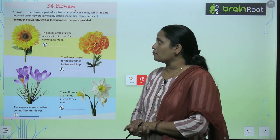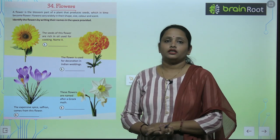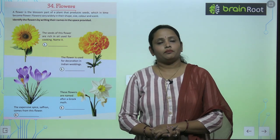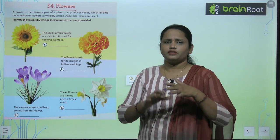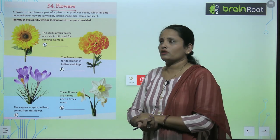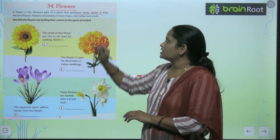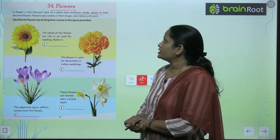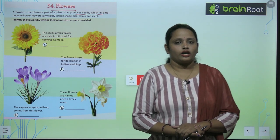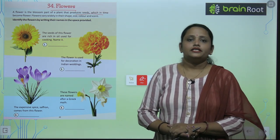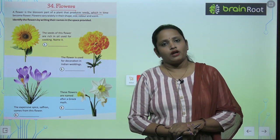A flower is the blossom part of the plant. The blossom part, meaning the flower, produces seeds which in time become a flower again. It produces seeds and then it becomes a flower.